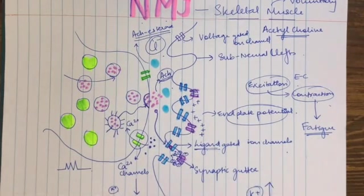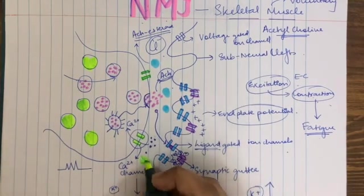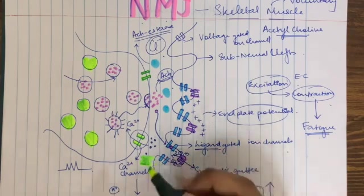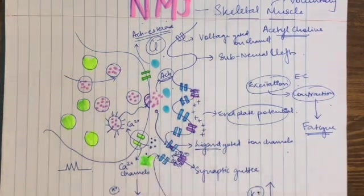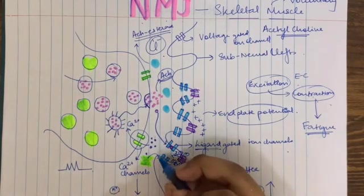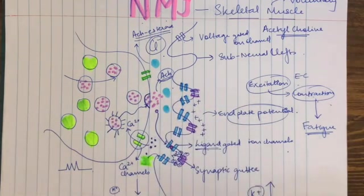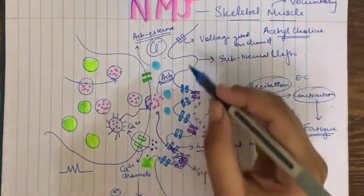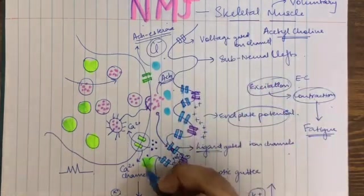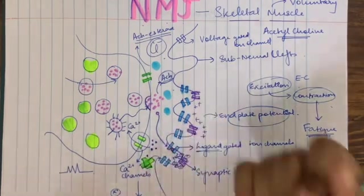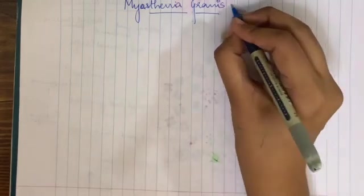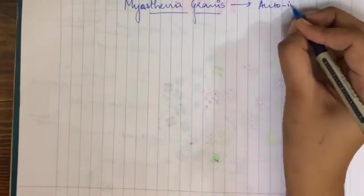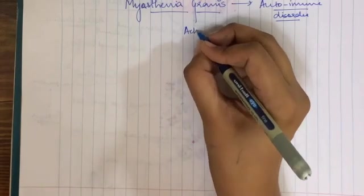But in myasthenia gravis, you have the presence of antibodies. These antibodies attack your receptors. When these antibodies attack the acetylcholine receptors, acetylcholine cannot bind to the receptors anymore, and hence the signal cannot transmit from the neuron to the muscle. If it does transmit, it is very weak in nature because most of the receptors have been destroyed by antibodies generated by our own body. Hence, myasthenia gravis is known as an autoimmune disorder — our own body causes this disorder by secreting antibodies against the receptors for acetylcholine.